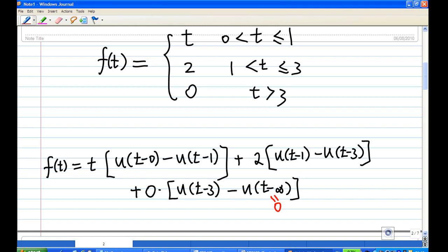And we finally have the function f(t) in terms of unit step function: t[u(t) - u(t-1)] + 2[u(t-1) - u(t-3)]. And this is the answer for question 6 part a.